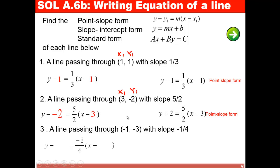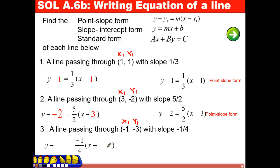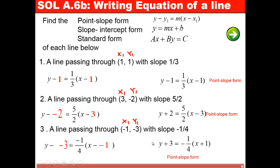Third example: I write the point-slope form and replace slope by negative 1/4. Y₁ is given to be negative 3 and x₁ is given to be negative 1. Replacing y₁ by negative 3 and x₁ by negative 1, I have double negatives in both positions. So I get y plus 3 equals negative 1/4 times x plus 1. That is the point-slope form.